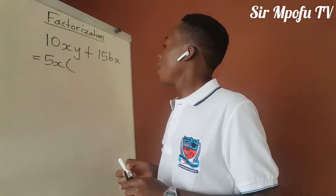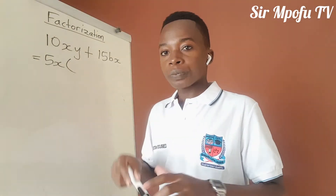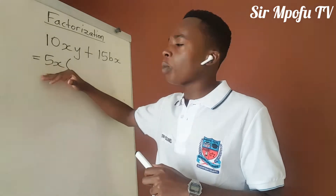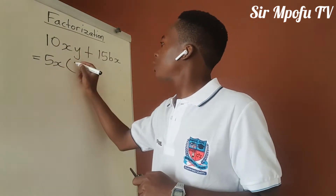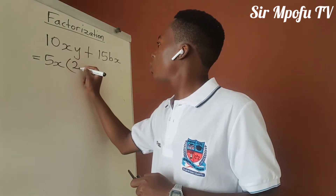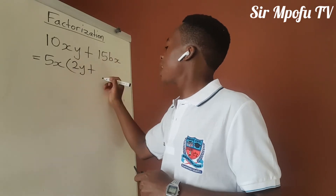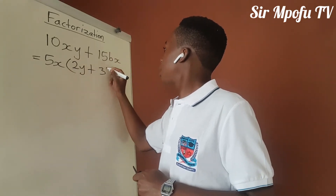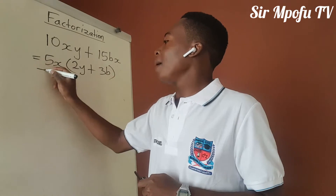So this is equal to 5x. And remember, as you've been calculating, you've been dividing by your highest common factor. So if you say 10xy divided by 5x, you're going to remain with 2y, plus you do the same here and you remain with 3b.